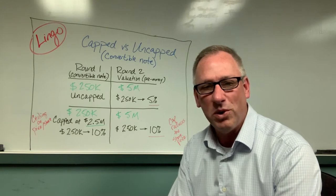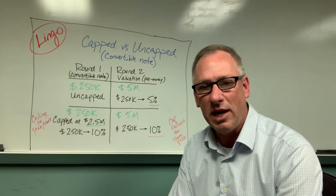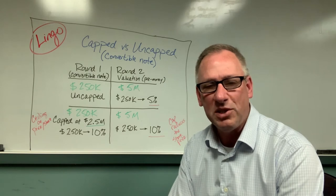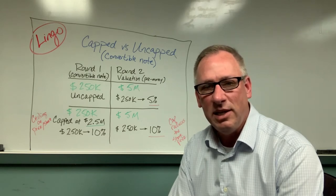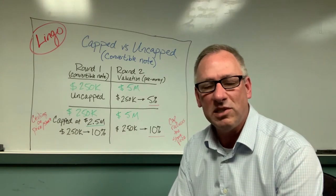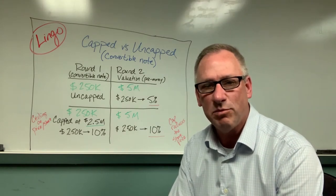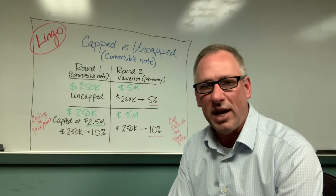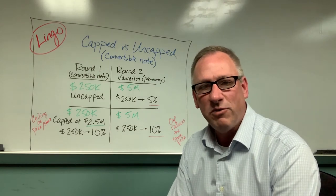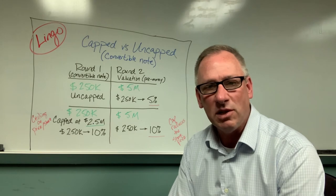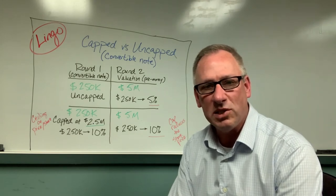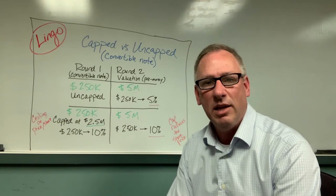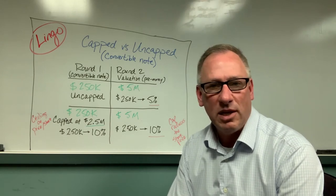Recall from before that a convertible note is a hybrid of debt and equity, and it allows an investor to loan money to a company with the opportunity to convert that to equity later on. The reason they do that is because the early stage company doesn't have much of a track record, and so a convertible note allows them to procrastinate on a formal valuation. For going in so early, that investor is often looking for some kind of compensation for the risk, and one way to do that is by including a valuation cap in the convertible note — and basically that valuation cap is kind of what it sounds like.